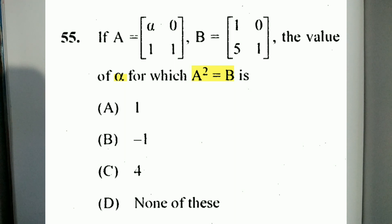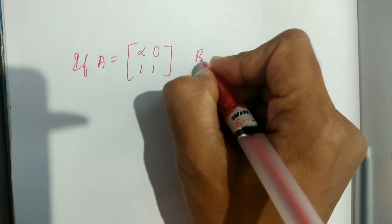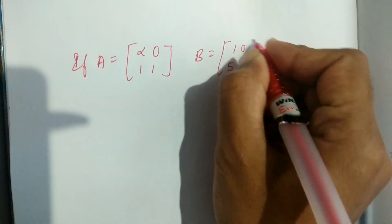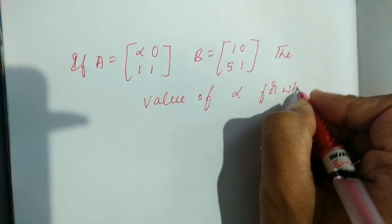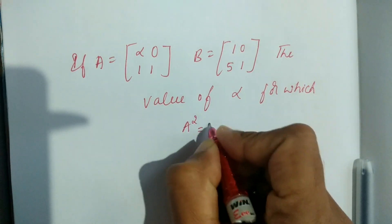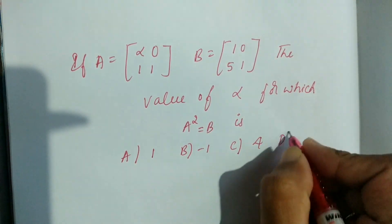The second question is: If A = [α, 0; 1, 1] and B = [1, 0; 5, 1], then find the value of α for which A² = B. Option A: 1, Option B: −1, Option C: 4, Option D: none of these.